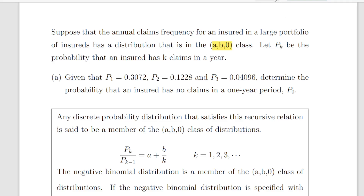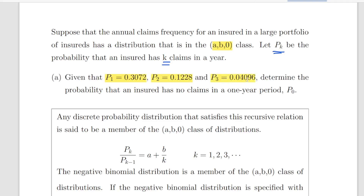Let P(K) be the probability that an insured has K claims in a given year. Given that P1 is equal to 0.3072, P2 is equal to 0.1228, and P3 is equal to 0.04096, determine the probability that an insured has no claims in a given year — that is to say, calculate P0.